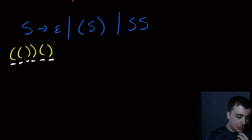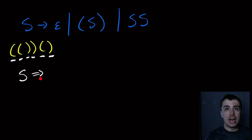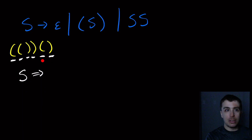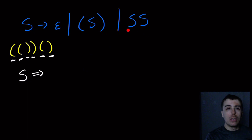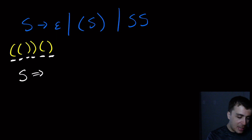So how is this string actually generated in the grammar? We always have to start with the start variable, and the double arrow means that I'm applying a rule - there's a left and a right side. Here I can only really apply the SS rule, because if I apply the other rule, that means I'm going to make a left parenthesis and then a right parenthesis, but the stuff in the middle is not balanced on its own. So I need to apply the SS rule right here.